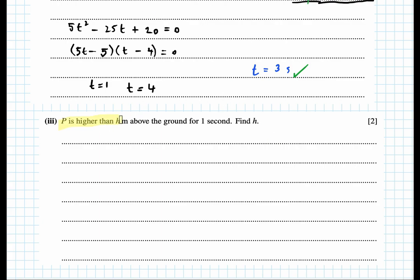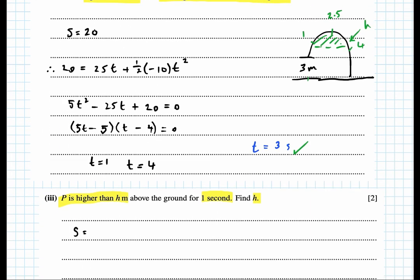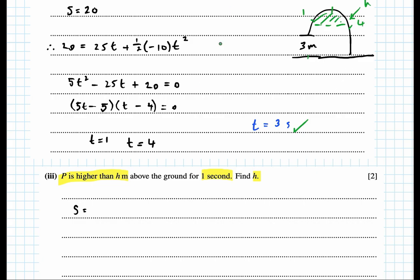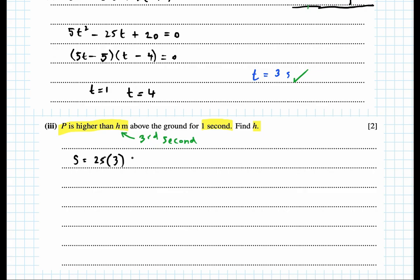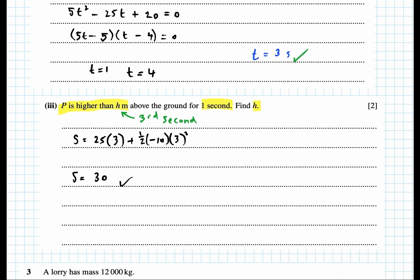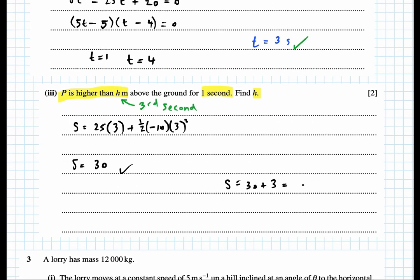The third part asks for height h, above which P is higher for exactly the third second. Our greatest height was at 2.5 seconds, so it falls within the second and third second. Substituting t = 3: s = 25 × 3 + ½ × (−10) × 3² = 30 meters. Adding the original 3 meters above the ground gives a total height of 33 meters.